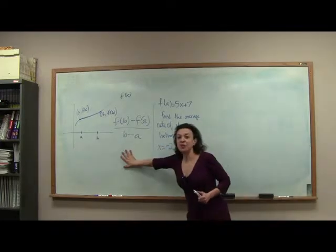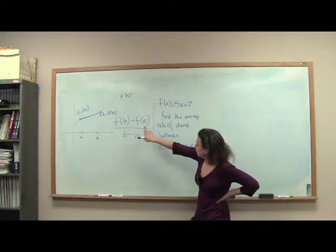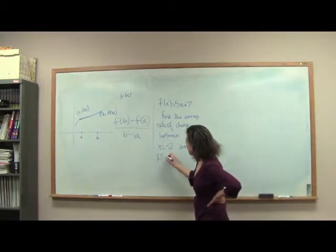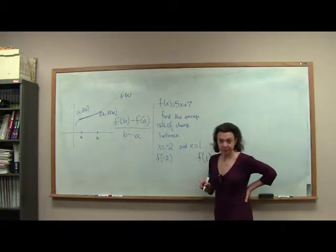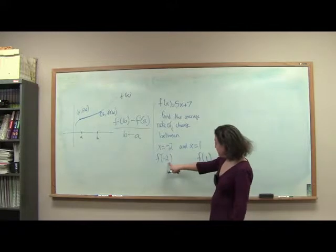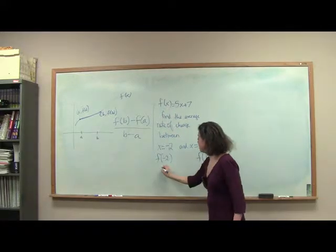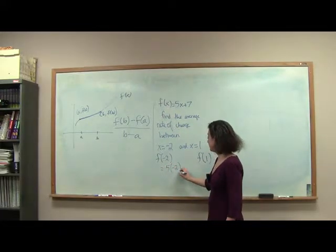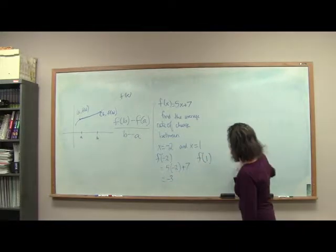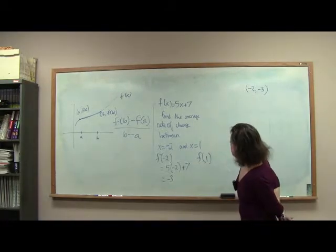Using this formula, how would we find the average rate of change? I need to know what my function values are — what is F of negative 2 and what is F of 1? I'm doing this to reinforce what we spoke of in the last section. Everywhere where I see an X in my function F, I plug in negative 2. So I have 5 times negative 2 plus 7, and I get negative 3. Written as an ordered pair: negative 2, negative 3.